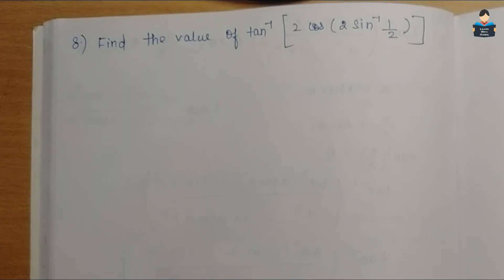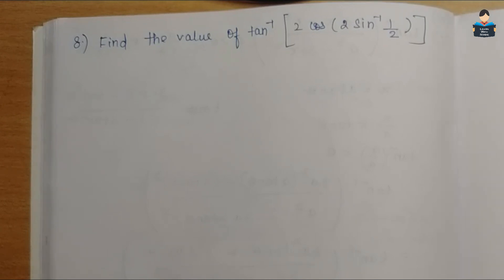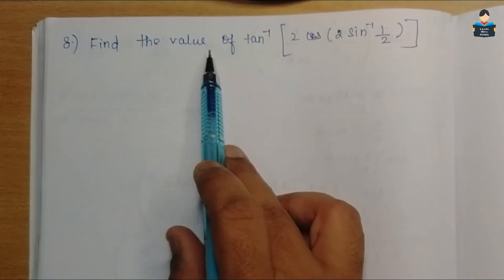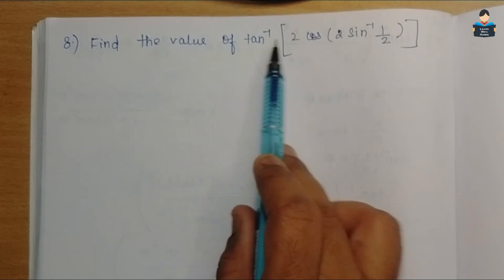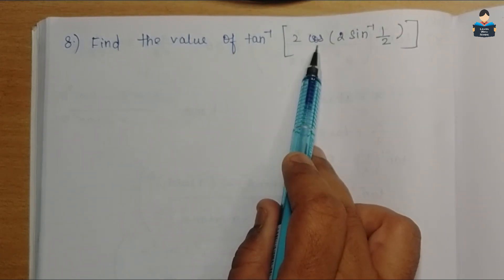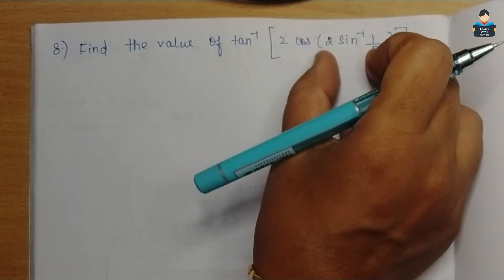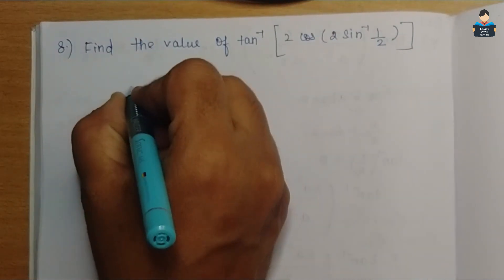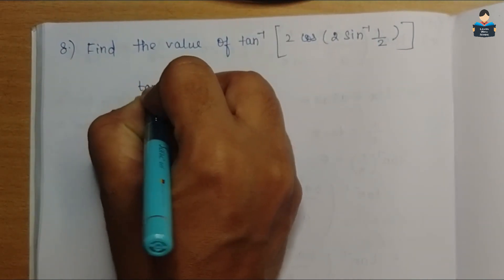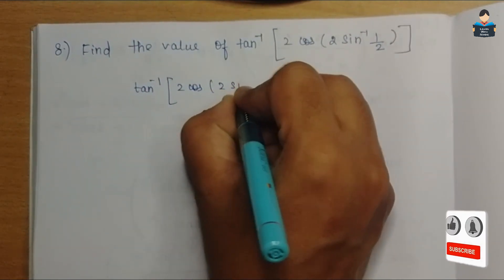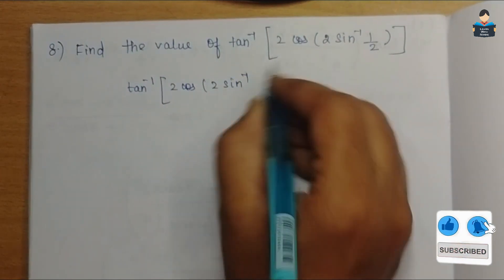Hello everyone, welcome to the channel. In this video we will solve NCERT Class 12 Chapter 2, Inverse Trigonometric Functions, Exercise 2.2, Question 8. Find the value of tan inverse of 2 cos of 2 sin inverse of 1 by 2. First, we solve the inner bracket.